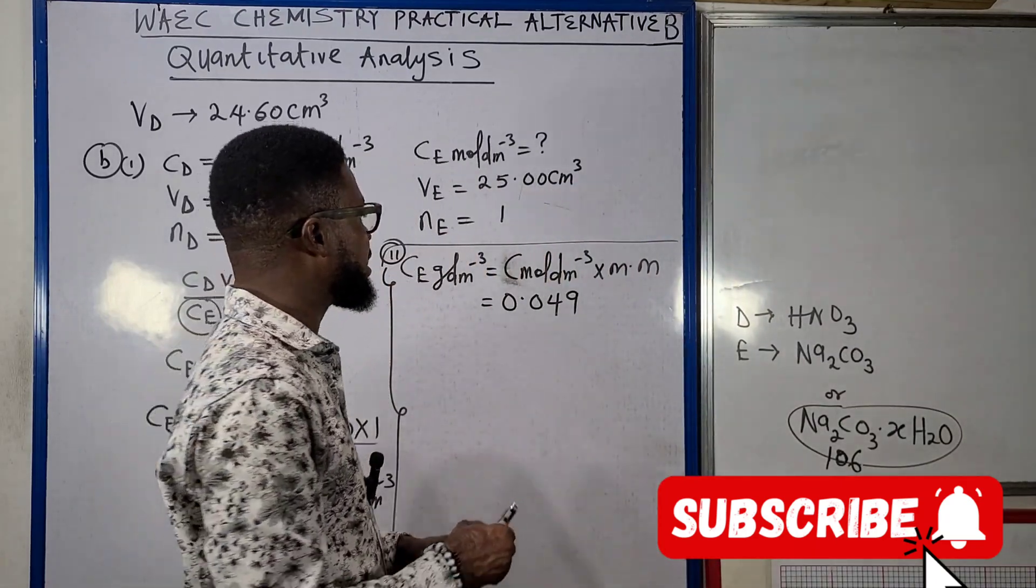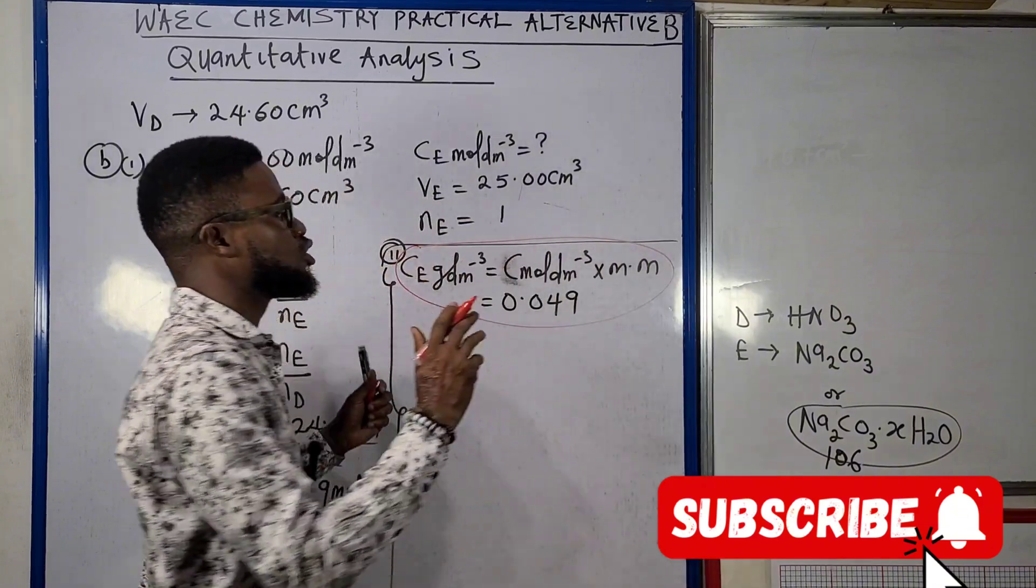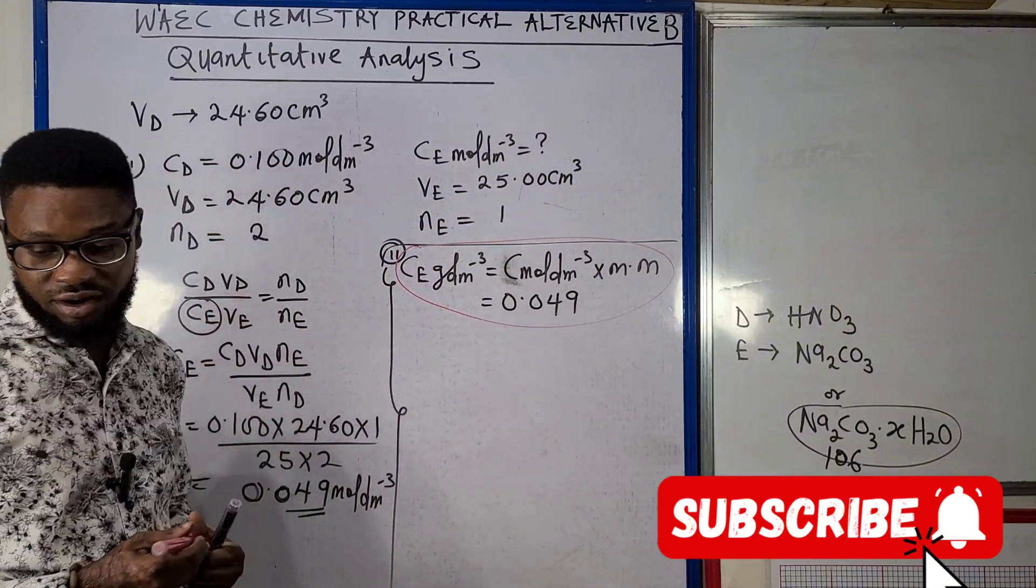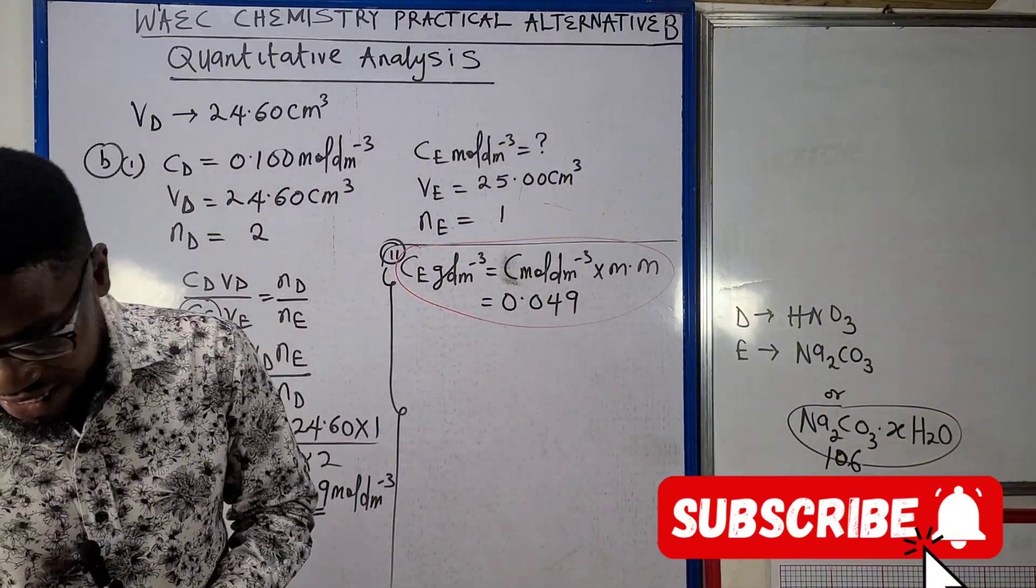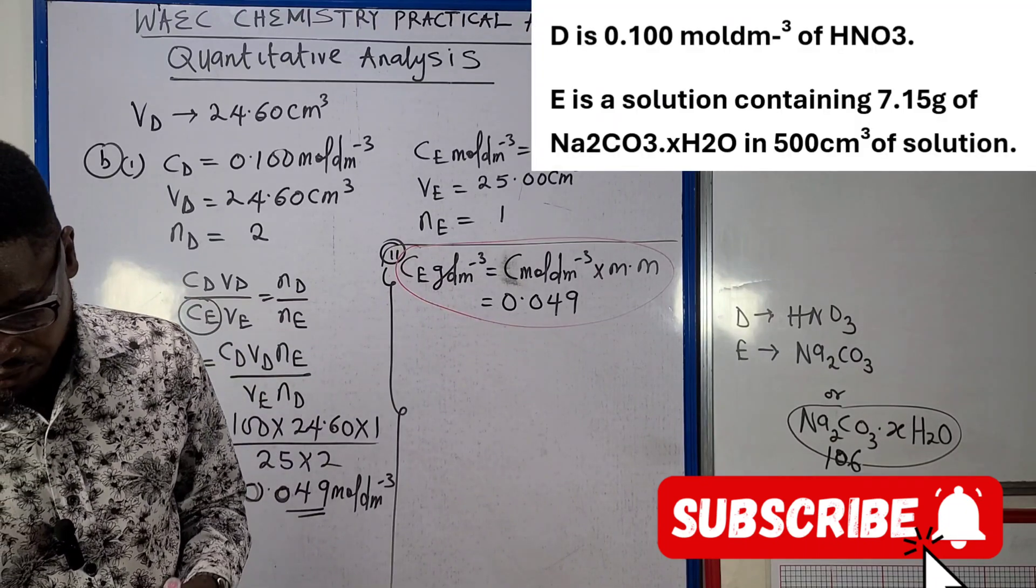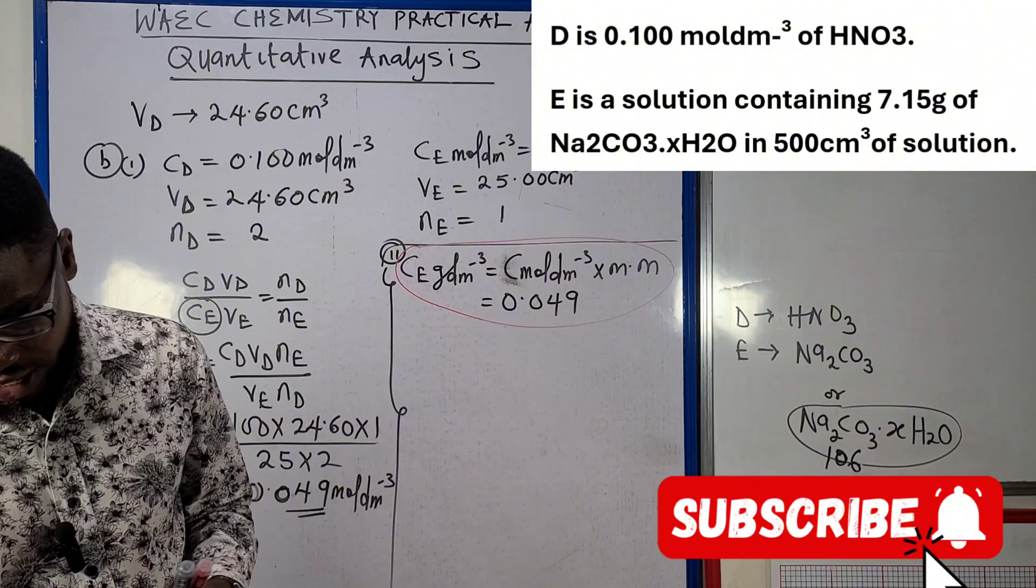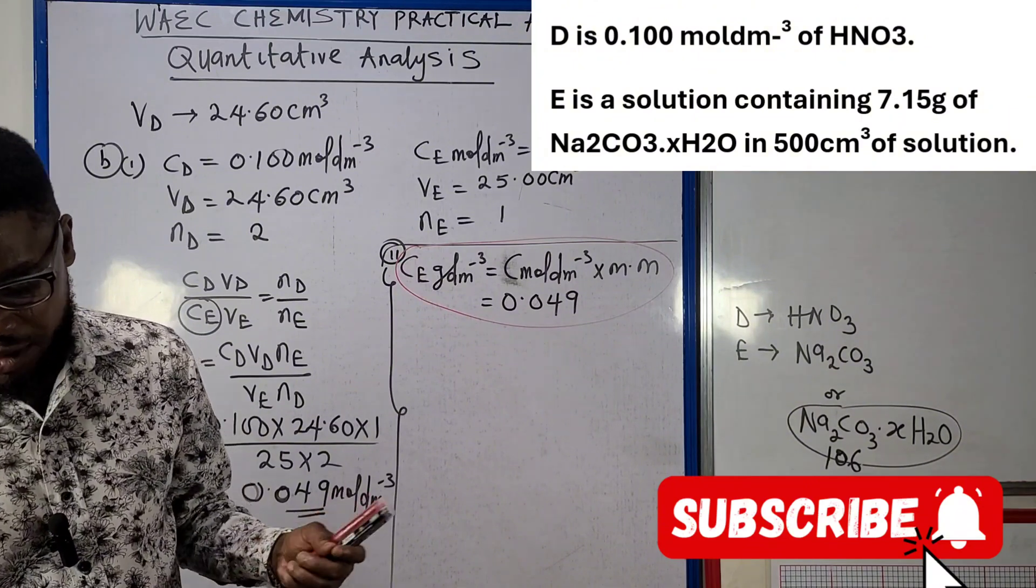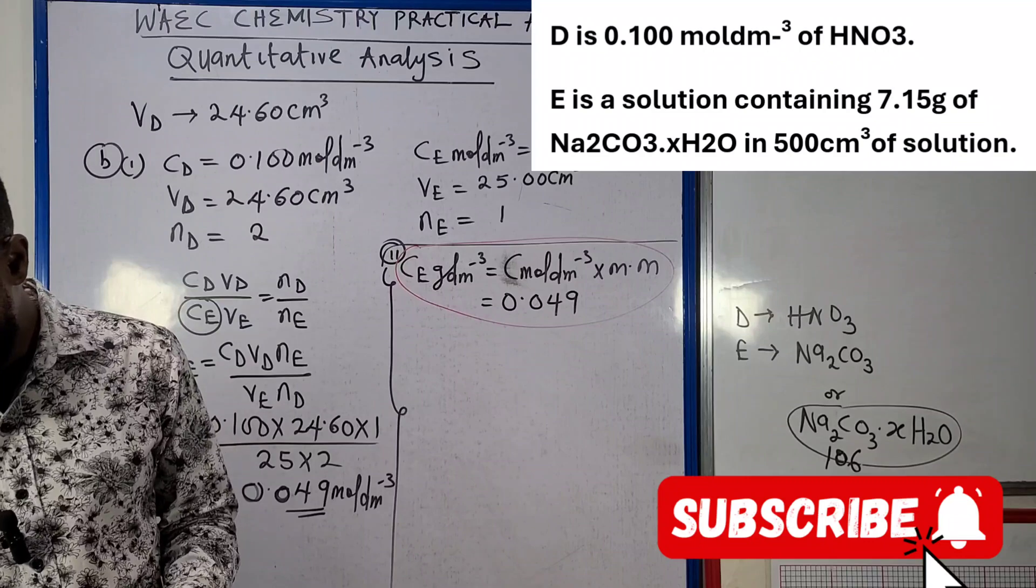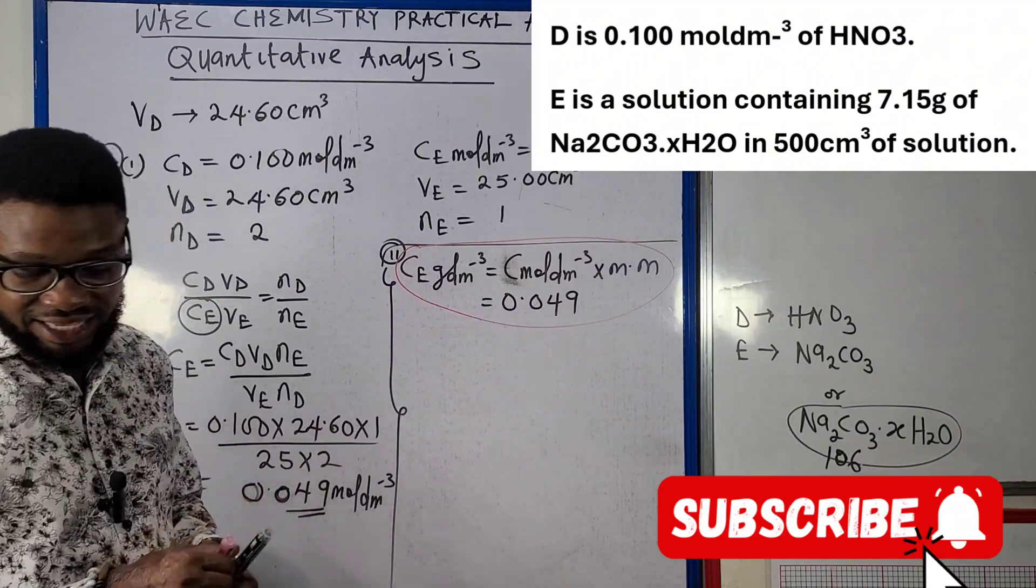Looking at it from that point, we have to take another approach to be able to get the concentration in gram per dm³. Because look at it in the question - it says E is a solution containing 7.15 gram of Na2CO3·xH2O in 500 cm³ of solution. So we have to look at getting the answer alternatively.